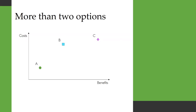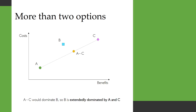What about when we have more than two options? Here we've got three options — A, B, and C — plotted on a graph with their costs and benefits on the Y and X axes. In this case, we might think that B could be worth investing in, but if we think about a hypothetical blend of A and C, we could find one which dominates B. This hypothetical point, shown here as A-tilde-C, would dominate B, so we say that B is extendedly dominated by A and C.